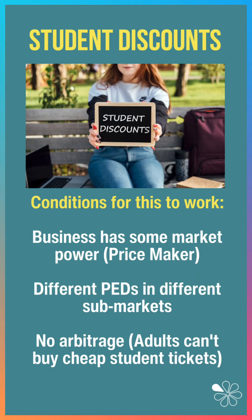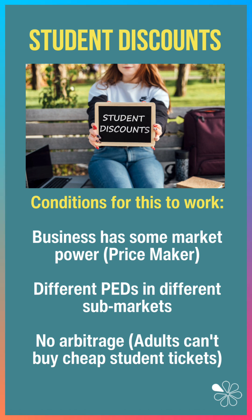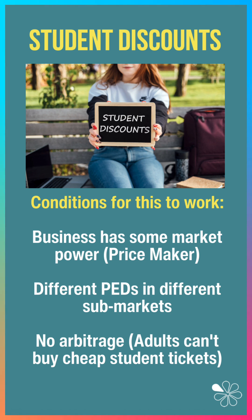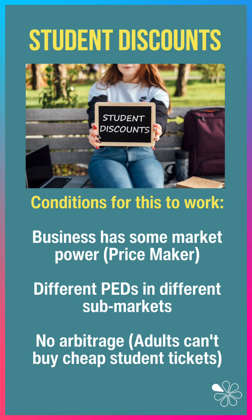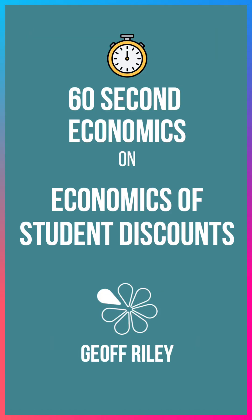For this to work, businesses have to have some market power — they need to be price makers, not price takers. There needs to be a clear price elasticity of demand difference in different submarkets, and also no arbitrage. So things like a student ID mean adults can't buy cheap student tickets.